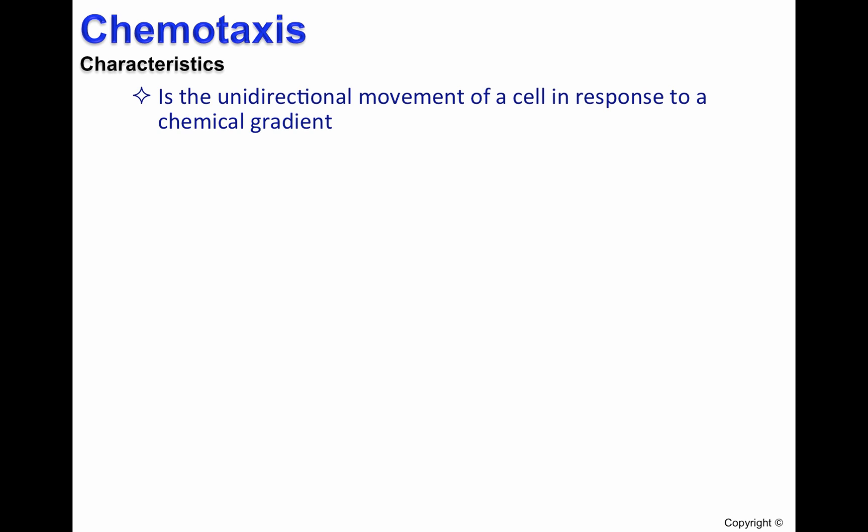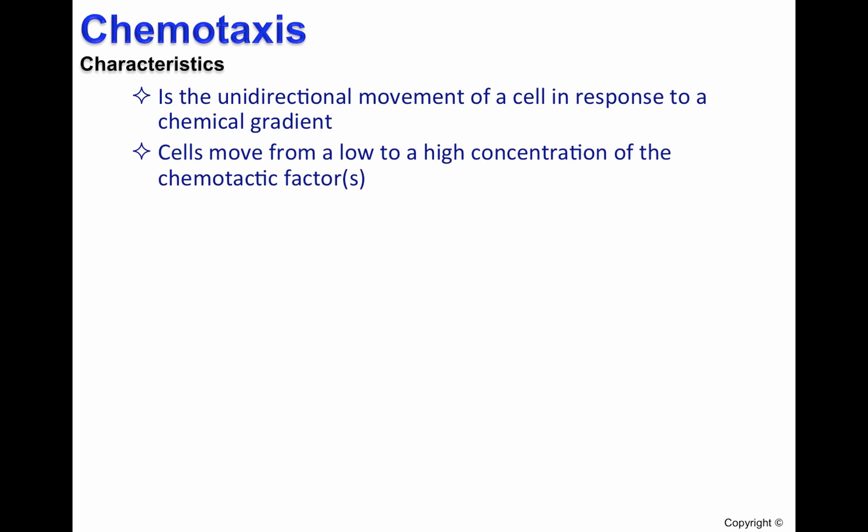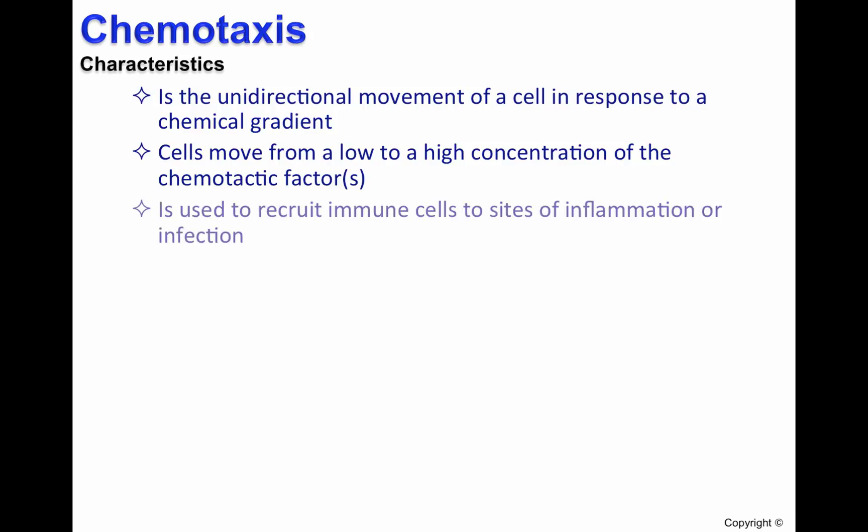Chemotaxis is the unidirectional movement of a cell in response to a chemical gradient. Cells move from a low to a high concentration of the chemotactic factors. It is used to recruit immune cells to sites of inflammation or infection.